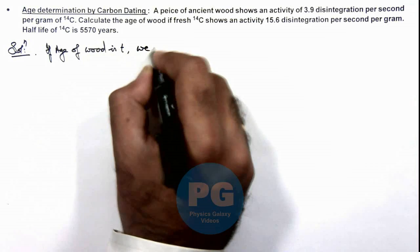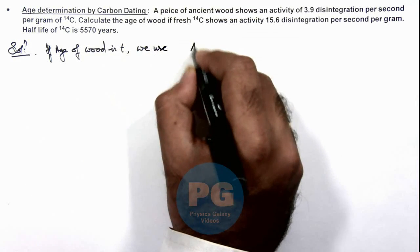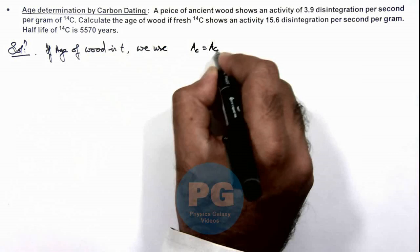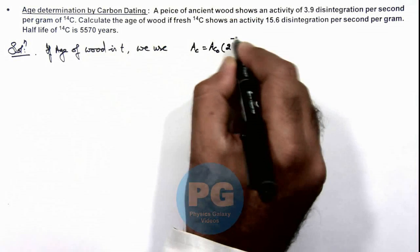Here we use the decay law: activity is equal to activity not, 2 to power minus t by T.